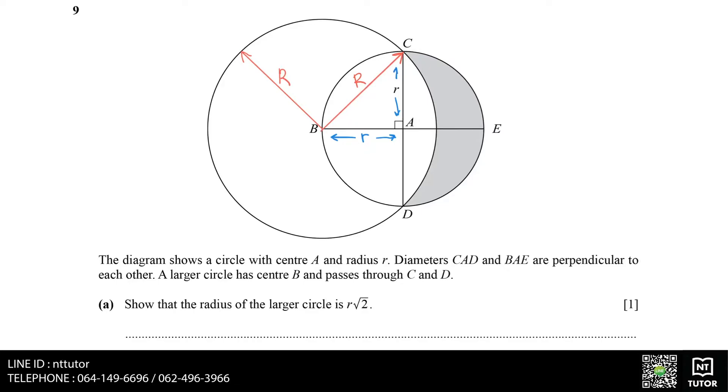Since diameters CAD and BAE are perpendicular to each other, this makes a right angle at CAB, and therefore triangle ABC is a right angle triangle. When working with right angle triangles, it can either be trigonometry or Pythagoras. Trigonometry involves angles and we don't have the angles, so the only option here is Pythagoras.